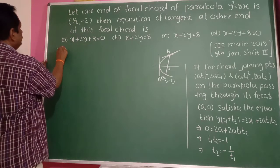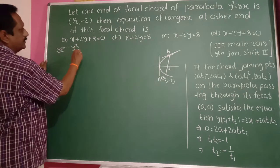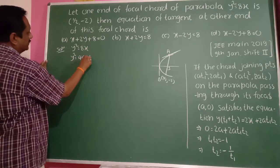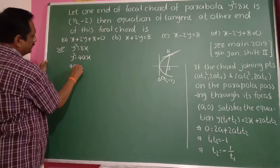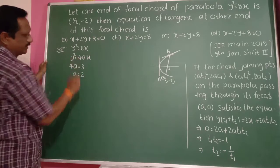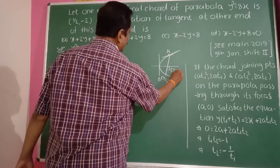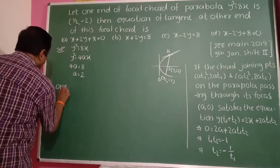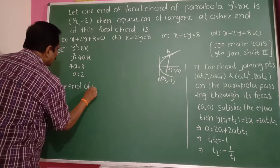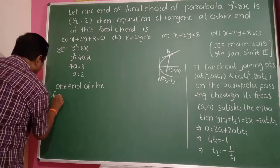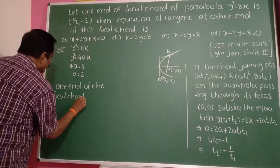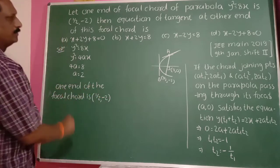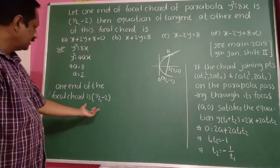The given parabola is y² = 8x. Comparing with y² = 4ax: 4a = 8, therefore a = 2. So focus S = (2, 0). One end of the focal chord is (1/2, −2). Consider this point as having parameter T1.